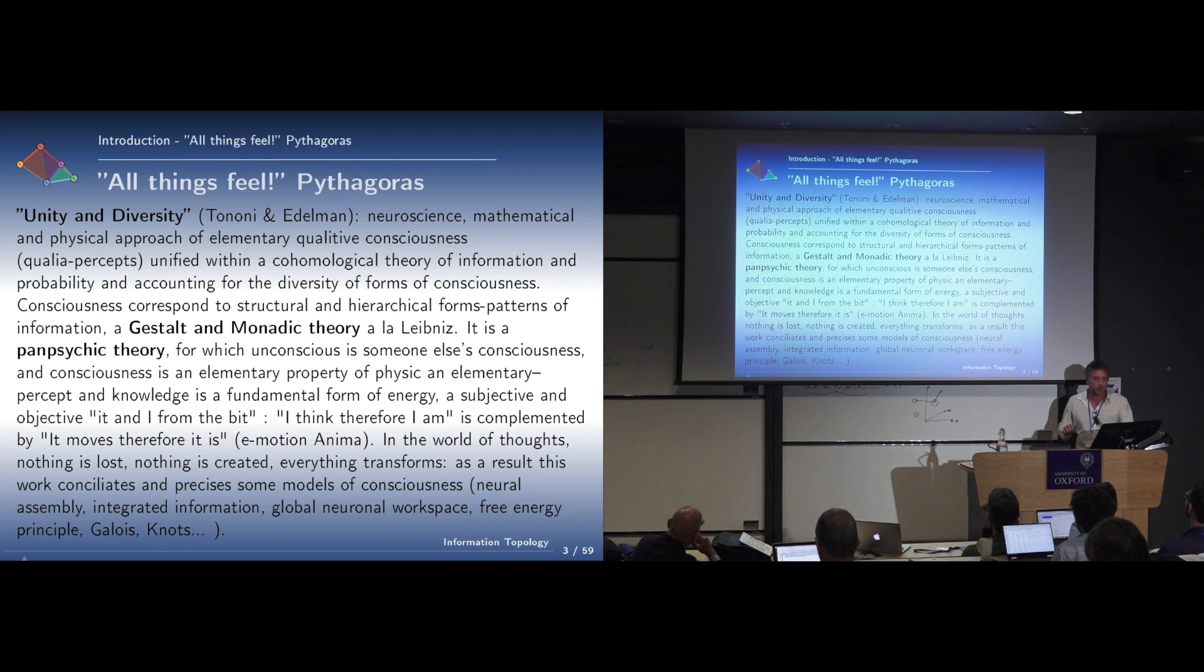What I will present is a neuroscience, mathematical, and physical approach of elementary qualitative consciousness called the qualia percept, which we try to unify in a cohomological theory of information and probability, and which accounts for the diversity of forms of consciousness. Consciousness corresponds to structural and hierarchical formed patterns of information, and you can consider it as a gestalt or monadic theory, à la Leibniz.